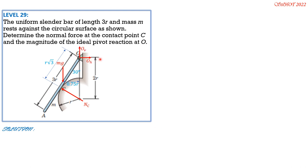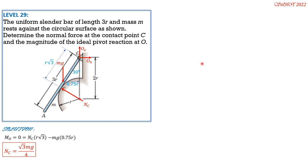Setting moment at O equal to zero, clockwise positive: Nc × R√3 − Mg × 0.75R = 0. Solving exactly: Nc = √3 Mg / 4. Setting ΣFx = 0: OH − Nc cos 30° = 0, so OH = (√3 Mg/4) × (√3/2) = 3Mg/8 rightward.